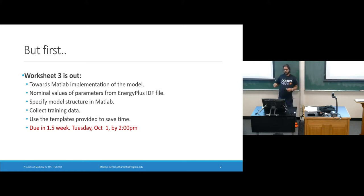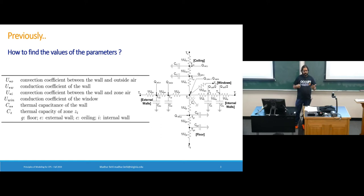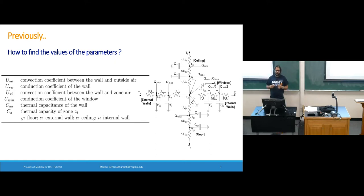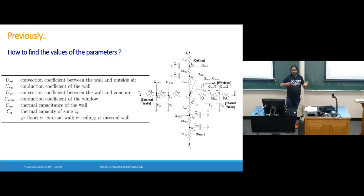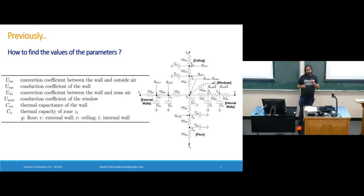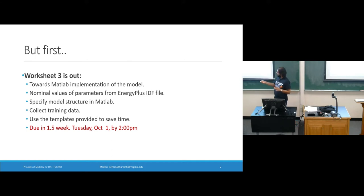The second half of this worksheet covers what I discussed last time. We have a model with a structure representing a state-space model, but we don't know the values of the coefficients — the R's and C's. Where do they come from? I briefly touched on this: given some real data, you have to estimate the values which match that data. Our real data is coming from EnergyPlus, but we treat it as real data.